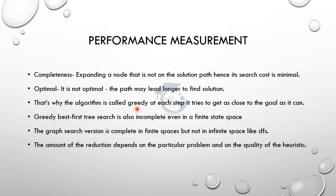That's why we call it greedy — it tries to get as close to the goal as it can. If we target any node on the other side, the reach will be that target. Greedy best first search in finite state space is incomplete. If there is a longer path, the solution is incomplete. In infinite space, it behaves like depth first search — if there is infinite space, we have an infinite loop. The amount of reduction depends on the particular problem and the quality of the heuristic function.